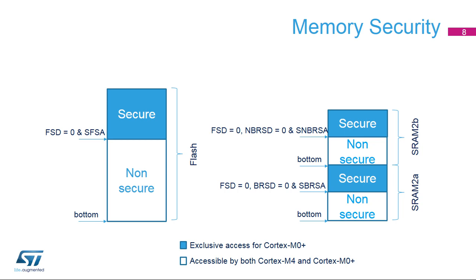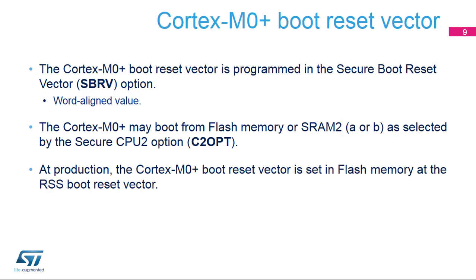However, it is recommended to secure both the Flash Memory and RAM used by the Cortex-M0 Plus software. The Cortex-M0 Plus Boot Reset Factor is to be programmed in the Secure Boot Reset Vector option and Secure CPU2 option. At production, the Cortex-M0 Plus Boot Reset Vector points to the root Secure Service Start Address in Flash Memory. In Secure Mode, the Cortex-M0 Plus Boot Reset Vector can only be changed by the Secure Cortex-M0 Plus side.